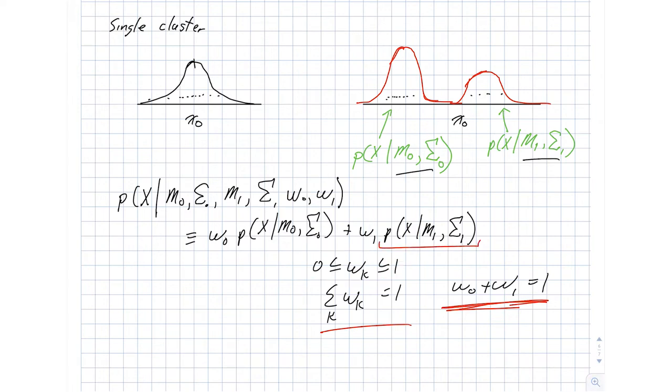In this case, what that means is W0 plus W1 is equal to 1. So once we've chosen one, the other one is completely determined. Because we started with two proper probability density functions, when we take the weighted sum of two PDFs and the weights add up to 1, then what we end up with is again a proper PDF.